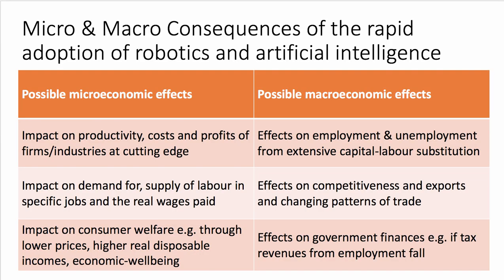Crucially, synopticity is about thinking of micro aspects and macroeconomic aspects — could be influences on, effects of, or policies. In this case, we're going to focus on the consequences of the fast adoption of robotics and artificial intelligence.